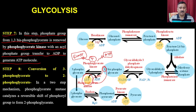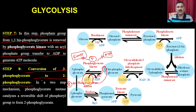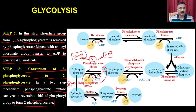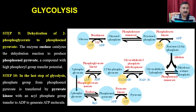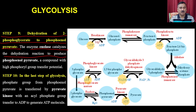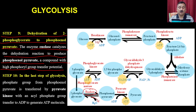From 3-phosphoglycerate, there is an isomerization reaction converting it into 2-phosphoglycerate in step number 8 — a change in the position of the phosphate group within the molecule — catalyzed by phosphoglycerate mutase. In step number 9, there is a dehydration of 2-phosphoglycerate to phosphoenolpyruvate. The enzyme enolase catalyzes the dehydration reaction to produce phosphoenolpyruvate, a compound with a high phosphoryl group transfer potential.